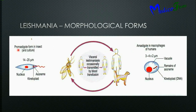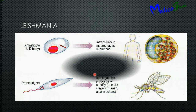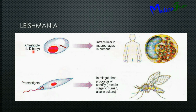Morphology and life cycle of leishmaniasis. The promastigoid form is present in the insect, having nucleus, kinetoplast, and flagellum. The amastigoid form is seen in the human, measuring 3 to 4 microns by 2 microns. It has a nucleus, kinetoplast containing genetic material, and vacuoles. Visceral leishmaniasis is occasionally transmitted by blood transfusion. The amastigoid form, also known as LD bodies, is found intracellularly in macrophages in peripheral blood.